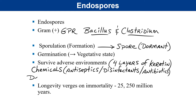Endospores can also resist dehydration — they are dehydrated cellular storage bodies. All water is drawn out and replaced with a compound called dipycolinic acid. This allows endospores to survive boiling water, since they have no moisture inside and won't expand or crack open from water becoming steam. Endospores are the most durable form of life on Earth.